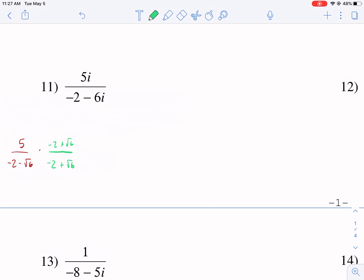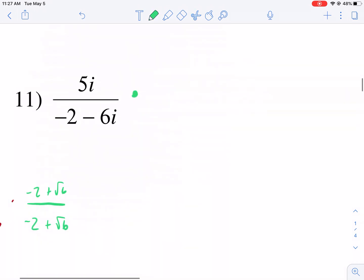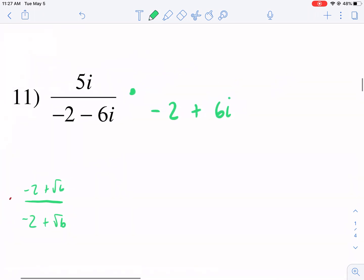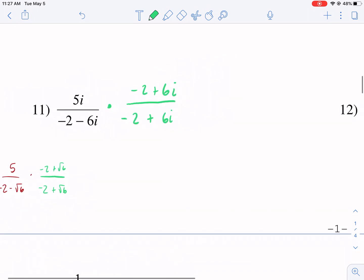We don't want imaginary numbers in the denominator. So we're going to use the principle of conjugates to get rid of it. So we're going to write negative 2. We're going to write 6i, but instead of making it minus, we're going to make it plus. One needs to be positive, one needs to be negative. So we're going to do this to the top and bottom, negative 2 plus 6i. And let's begin.